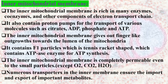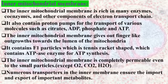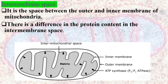The inner mitochondrial membrane is not permeable even to small particles, except oxygen, carbon dioxide, and water, which can be exchanged with the outer environment. Numerous transporters in the inner membrane are also available. The intermembrane space is the space between the outer and inner membranes of mitochondria, and there is a difference in protein content in this intermembrane space.